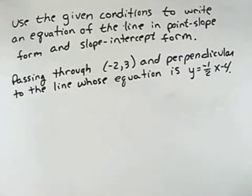Use the given conditions to write an equation of the line in point-slope form and slope-intercept form, passing through the point (-2, 3) and perpendicular to the line whose equation is y equals -1/2x minus 4.